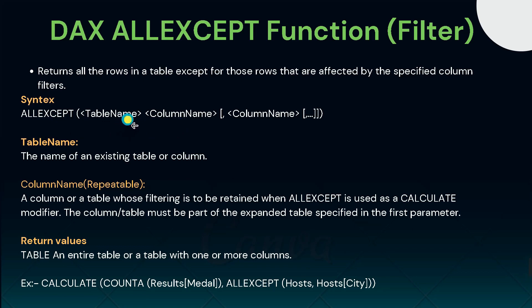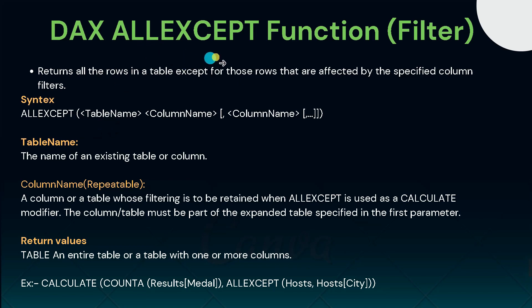In ALLEXCEPT, the table name refers to the table over which all context filters are removed except filters on the columns specified in the subsequent arguments. The column name refers to one or more columns for which the context filter must be preserved. Remember, ALLEXCEPT can return an entire table or a table with one or more columns.